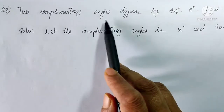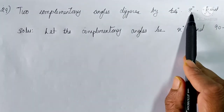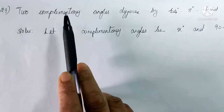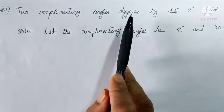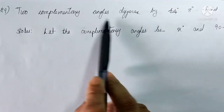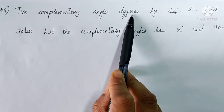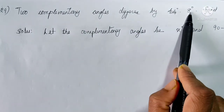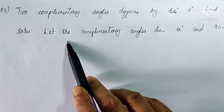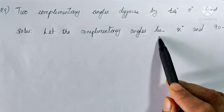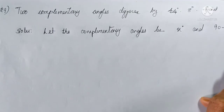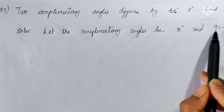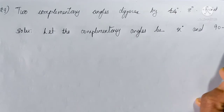Question number 29: Two complementary angles differ by 8 degrees. Find the angles. What do you mean by complementary angles? If the sum of 2 angles is equal to 90 degrees, then those 2 angles are known as complementary angles. The difference between the complementary angles is 8 degrees. So we can take the complementary angles like this: let the first angle be X degrees, then the second will be (90 minus X) degrees, because their sum equals 90.